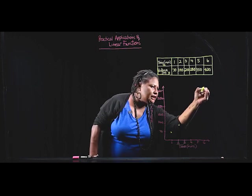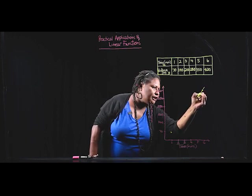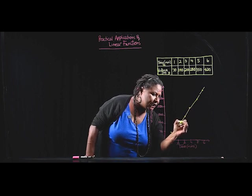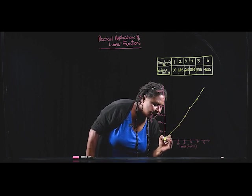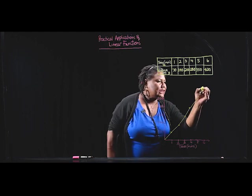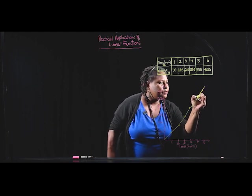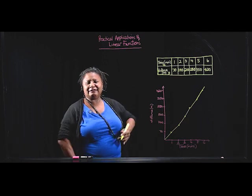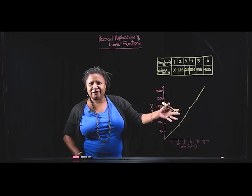You can already see that our points form what is a straight line. So this is Mary's jog represented on a Cartesian plane using linear functions.